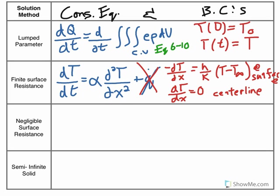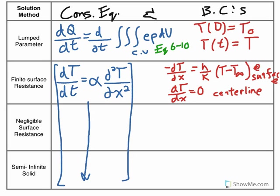The third one is negligible surface resistance. Now, you're going to have this same equation that's up here. Your system's conservation equation is going to actually simplify to the same general form for these bottom three solution methods. So, one directional temperature conduction and no heat generation. The only thing that's different between these bottom three are the boundary conditions.